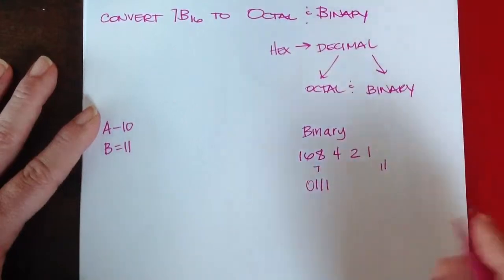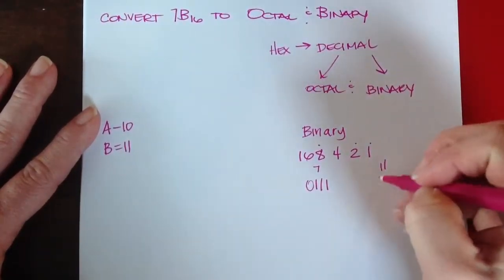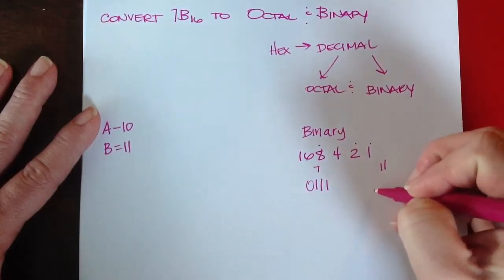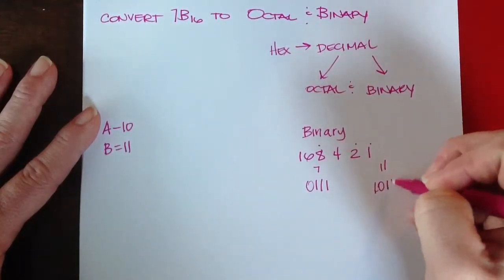Then I need to write the number 11. So I need an 8, I need a 2, I need a 1. So that would be 1, 0, 1, 1.